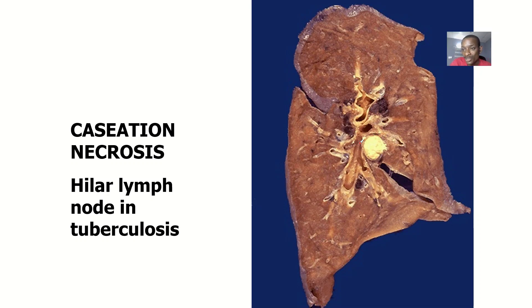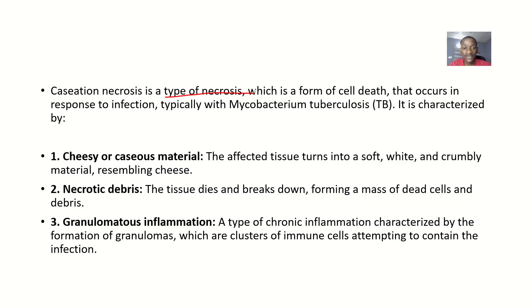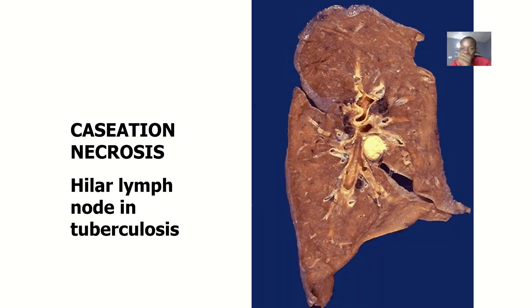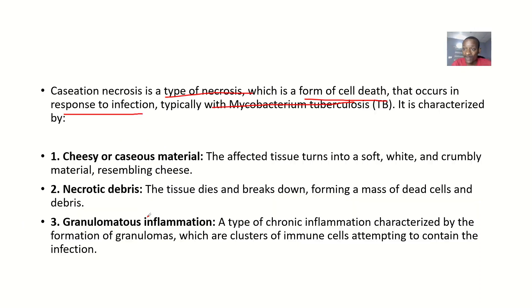We'll be talking about the definition and characteristics of caseous necrosis. Caseous necrosis is a type of necrosis — a form of cell death — that occurs in response to infection, typically with Mycobacterium tuberculosis, though it can occur with other infections. That's why we're referencing the lungs here, as this type of necrosis is mostly seen in tuberculosis.